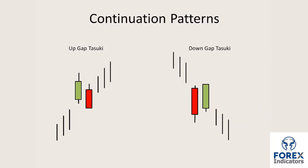Here we have a downgap tozuki — a bearish two-candle continuation pattern. The downtrend in this case gaps down to a red candle, followed by the green candle which is pushing the market back up again. The point to note here is that the green candle opens inside and closes above the red candle's real body.